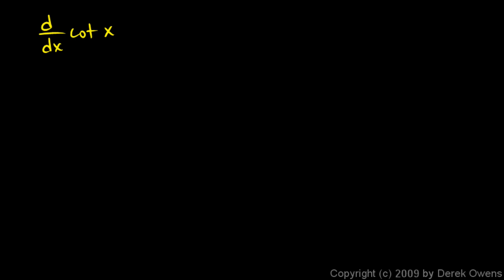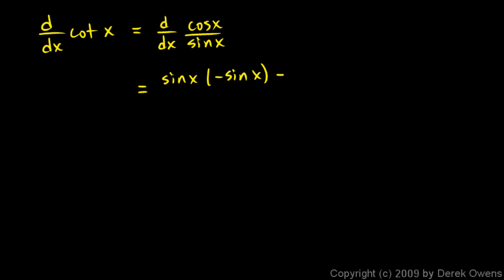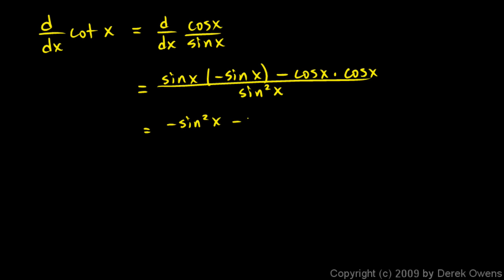With a similar technique, we can find the derivative of the cotangent function. The derivative of cotangent will be the derivative of cosine x over sine x, since cotangent is cosine x over sine x. Applying the quotient rule: low d high — the derivative of cosine is negative sine — minus high, which is cosine x, times d low — the derivative of sine x is cosine x — over the denominator squared. That gives us negative sine squared x minus cosine squared x all over sine squared x.